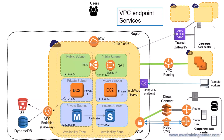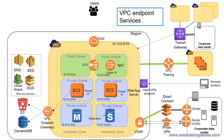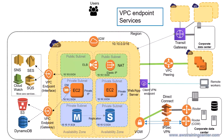VPC endpoints come in two flavors. The VPC endpoint gateway is used to reach S3 or DynamoDB. If you want to reach other AWS services — such as SQS, CloudWatch, SNS, or SES — you use a VPC endpoint interface. The difference is that an endpoint interface creates an ENI (Elastic Network Interface) inside your subnet, and traffic is routed through that ENI to the endpoint service. There are around 60 VPC endpoint interface services you can reach privately without going over the internet.